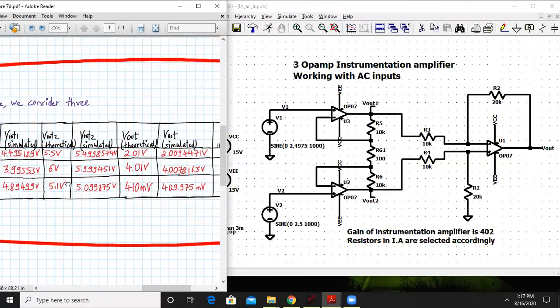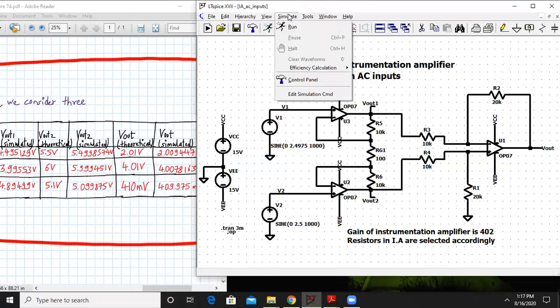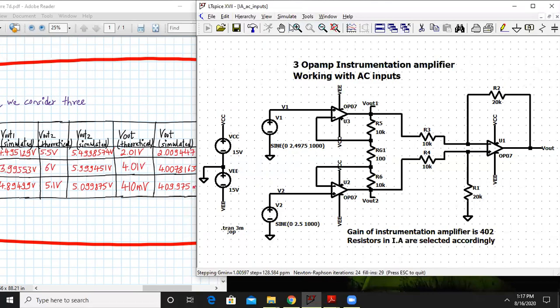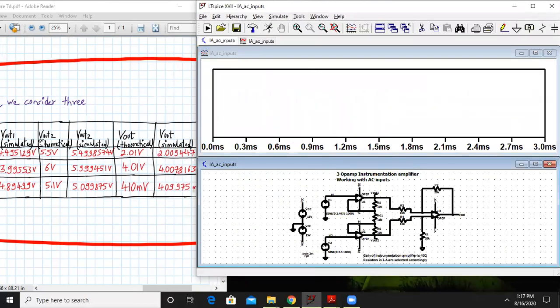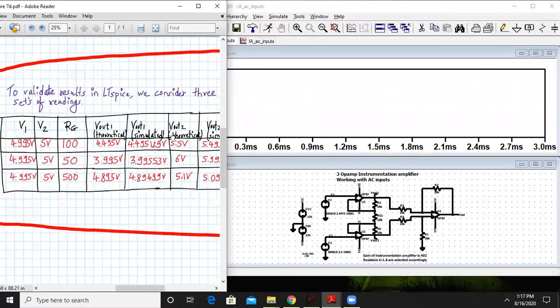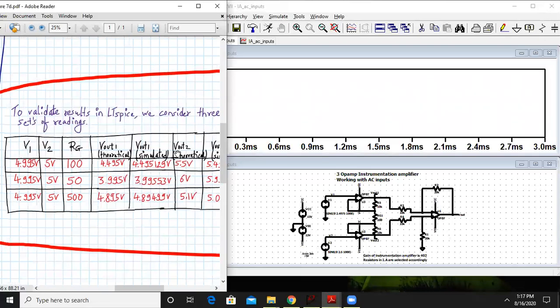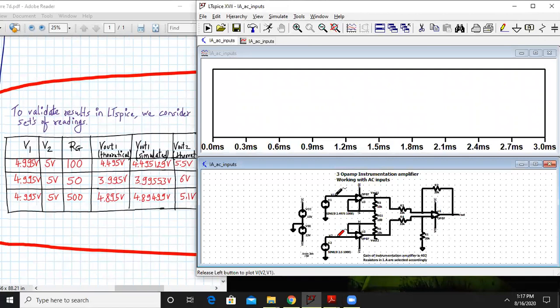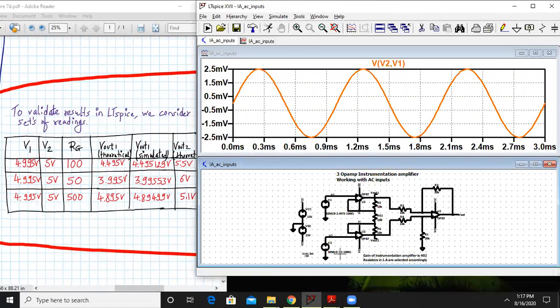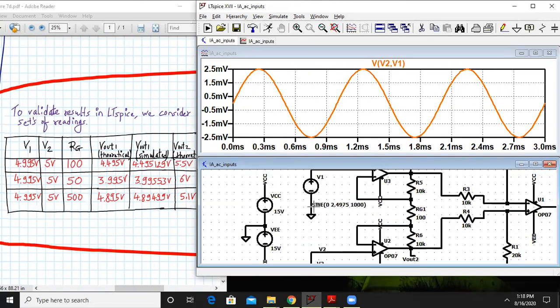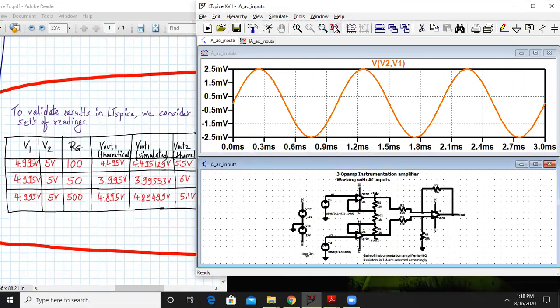If we run, I can plot V1 and V2 separately but if I want to plot V1 and V2 difference I can plot it like this directly. As you can see the difference between the two inputs has come. This is my differential input. That means difference between V1 and V2 I have plotted over here. Next I will plot Vout in another plot plane. I'll right click, add phase and click on Vout. Here is my Vout.